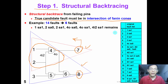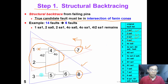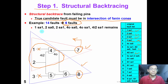The true candidate fault must be in the intersection of the two triangles. The original fault list has 14 faults. For the first fault, input 1 stuck-at-1 is in the intersection, so this fault could be a true candidate. For the second and third faults, they are both inside the triangle intersection. However, for the fourth fault, input 3 stuck-at-1 is not inside the intersection of two triangles, so this fault cannot be the true candidate fault. After this check, we have six faults remaining as our candidate fault list.